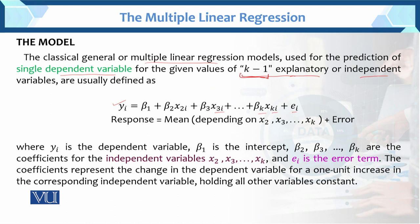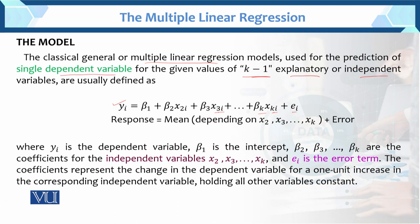Here we have k-1 explanatory (independent) variables. If we introduce x1, assign β2 to x1, β3 to x2, and so on, the variables go up to k-1. The last variable is denoted xk in notation, so the total number of independent variables is k-1, because x1 does not appear in the model. So basically, there are k-1 variables — don't get confused between k-1 and k in the notation.